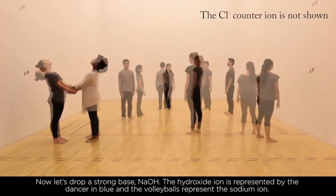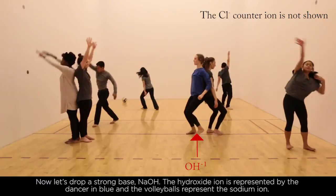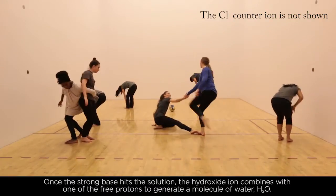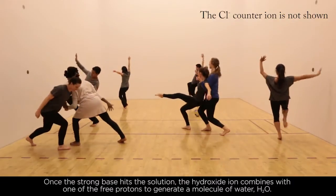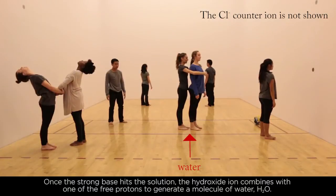Now let's drop a strong base, NaOH. The hydroxide ion is represented by the dancer in blue, and the volleyballs represent the sodium ion. Once the strong base hits the solution, the hydroxide ion combines with one of the free protons to generate a molecule of water, H2O.